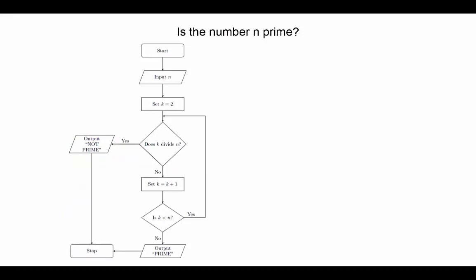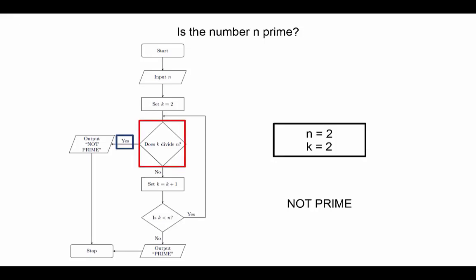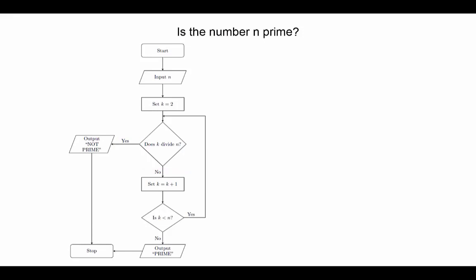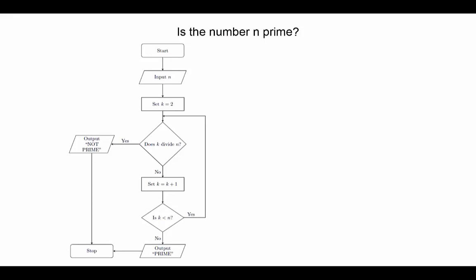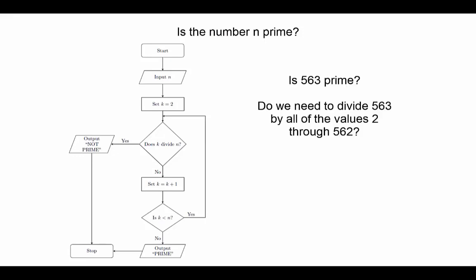It's worth spending a moment to think about how you might try to fix this program. One approach is to insert another decision point at the beginning to catch the special case. Another approach is to redesign the loop so that it tests the value of k before it does the division test. One of the interesting aspects of computer programming is that there are often many solutions to a particular problem. Once you get good at problem solving and can make the program work, you then have the challenge of optimizing the program so that it runs faster. For example, do we really need to test all the numbers from 2 through n? Are there some values that we can skip? These are the sorts of questions that can lead to interesting problems in both mathematics and computer science, but we'll just have to leave these things here for this course.